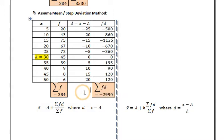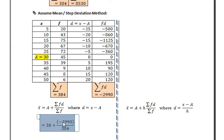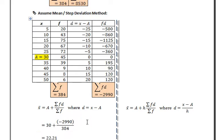Substituting in the formula: x-bar equals a plus summation FD upon summation F, where a is 30, summation FD is minus 2290, and summation F is 384. Simplifying this gives x-bar equal to 22.21.